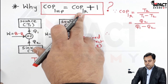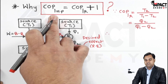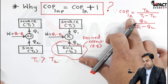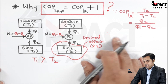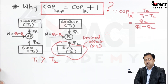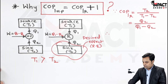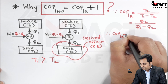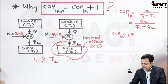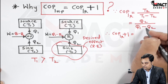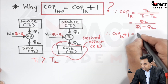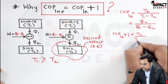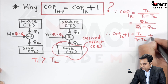I have to prove that COP of refrigerator + 1 = COP of heat pump. I'll take the COP of refrigerator, add 1 to it, and compare it with the COP of the heat pump. Taking the temperature form: COP of refrigerator + 1 = T2 / (T1 − T2) + 1.